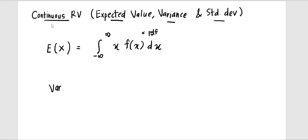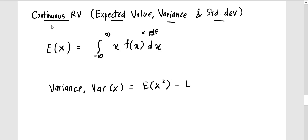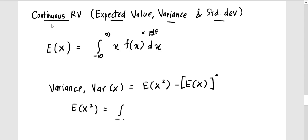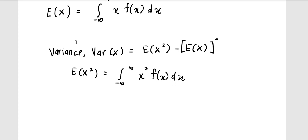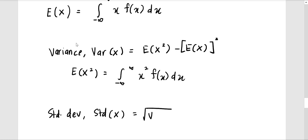Then we have the variance, which is equal to E(x²) minus [E(x)]². Your E(x) comes from the integral of x times f(x) dx, and your E(x²) comes from the integral from negative infinity to positive infinity of x² times f(x) dx. The last one is the standard deviation, which is equal to the square root of the variance.